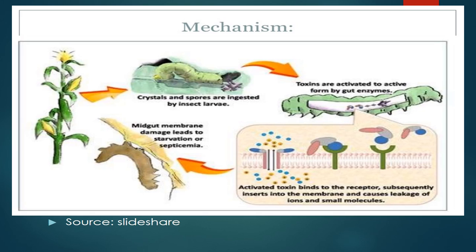When the larva is killed in the middle of its life cycle, the reproductive phase of the caterpillar is stopped, destroying the pest. In this picture, we can see the caterpillar larva feeding on the plant sap, which contains the crystalline protein. The protein enters the gut, turns toxic in the alkaline environment, binds to receptors, is inserted into the membrane, causes leakage of ions and small molecules, and the cell ruptures, killing the larva.